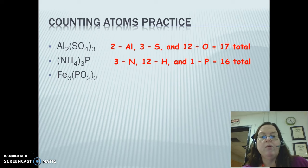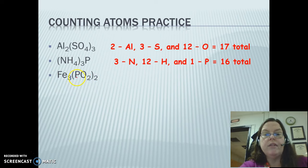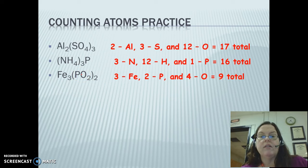How about Fe₃(PO₂)₂? We see three Fe, so three iron. We have two times one phosphorus, so two phosphorus, two times two oxygen, so four oxygen. That is a total of nine atoms.